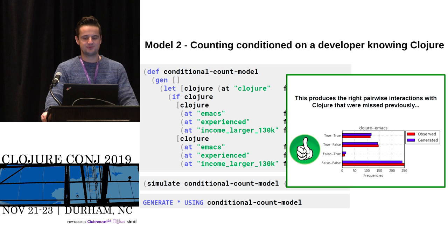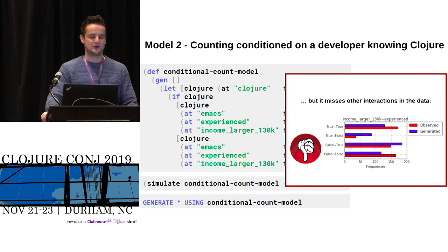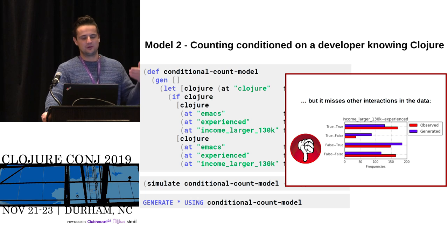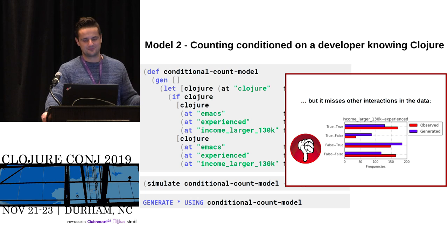This does produce the right pairwise interactions that were missed previously, but it misses others. If you're following along, you realize you can't count all the co-occurrences because you'll quickly end up in regimes where very little data is observed, and the space of dependencies just explodes. So what do you do about that?